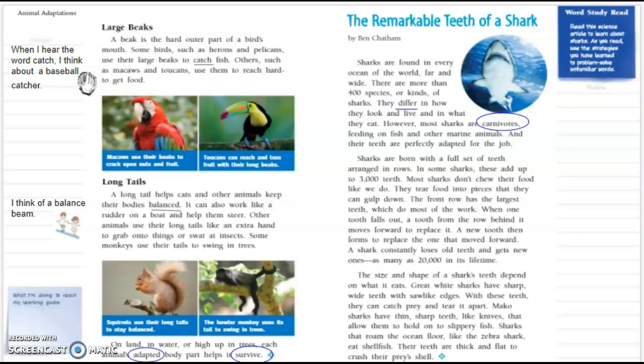And their teeth are perfectly adapted for the job. Sharks are born with a full set of teeth arranged in rows. In some sharks these add up to 3,000 teeth. Most sharks don't chew their food like we do. They tear food into pieces that they can gulp down. The front row has the largest teeth which do most of the work. When one tooth falls out, a tooth from the row behind it moves forward to replace it.